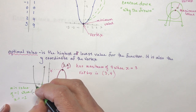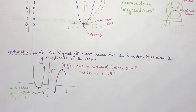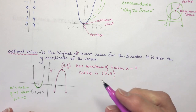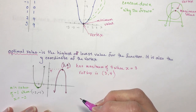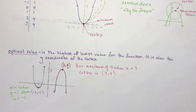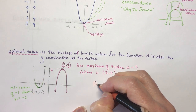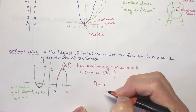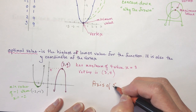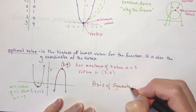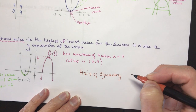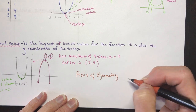Parabolas are perfectly symmetrical about a line called the axis of symmetry. This is a really important feature you'll be finding frequently. The axis of symmetry passes right through the vertex, dividing the parabola into two mirror-image halves.